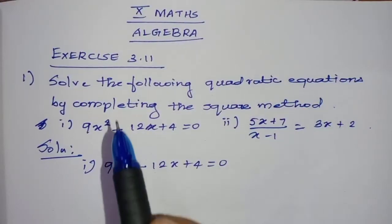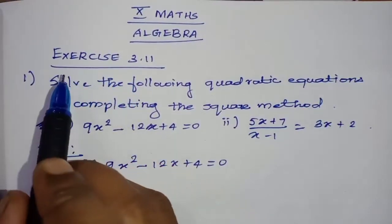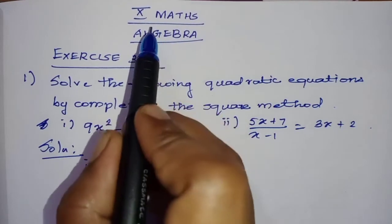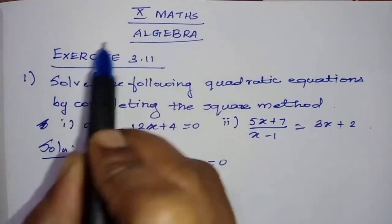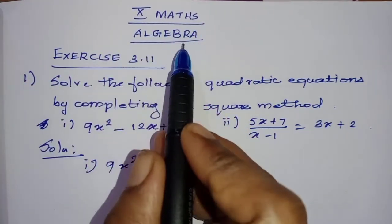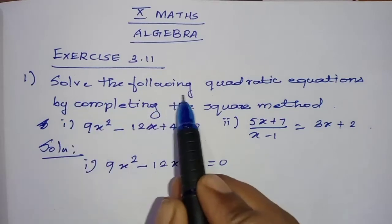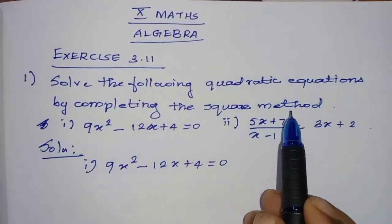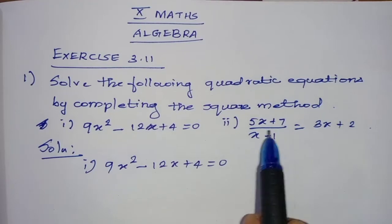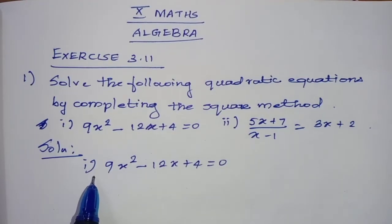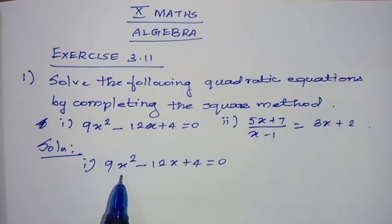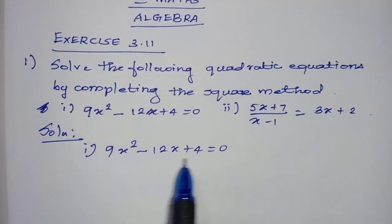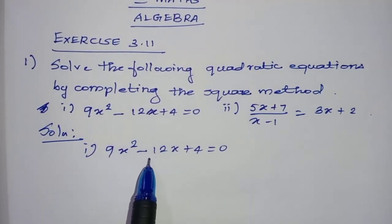Hi students, welcome to Benimax. In this video I am going to teach exercise 3.11 from the 10th Samacheer Maths chapter Algebra — solve the following quadratic equations by completing the square method. Two sums are given. The first sum is: 9x² minus 12x plus 4 equal to zero. So it is a quadratic equation.